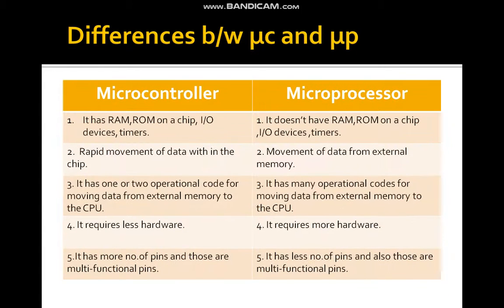Difference between microcontroller and microprocessor — referring to MCU and MPU. A microcontroller has RAM, ROM on a chip, along with IO devices and timers. But a microprocessor does not have RAM or ROM on a chip, though both have IO devices and timers.